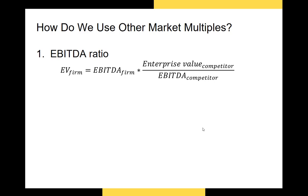Let's talk about how we use these ratios to calculate the intrinsic price per share using the market multiples approach. The EBITDA ratio works a bit differently — when we use it for market multiples, we're essentially calculating the intrinsic enterprise value of the firm. We take our target firm's EBITDA and multiply it by the EBITDA ratio of a direct competitor, or the average of a set of competitors. The EBITDA ratios cancel out and we're left with the growth prospects of our competitor applied to the profitability of our target firm.